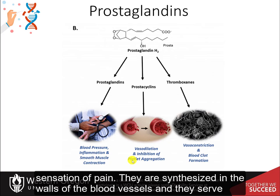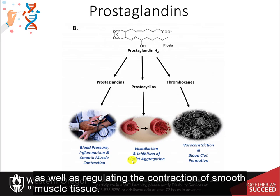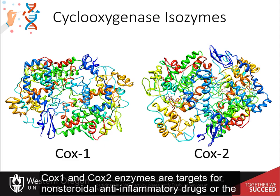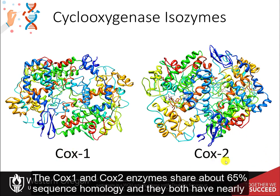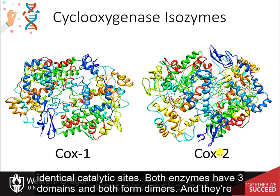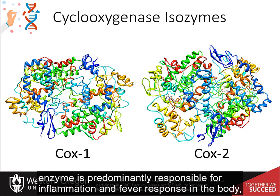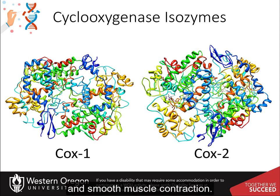Prostaglandins are synthesized in the walls of blood vessels and serve the physiological function of preventing needless clot formation, as well as regulating the contraction of smooth muscle tissue. Due to their role in mediating inflammatory and fever response within the body, COX-1 and COX-2 enzymes are targets for non-steroidal anti-inflammatory drugs, or NSAIDs, such as ibuprofen. The COX-1 and COX-2 enzymes share about 65% sequence homology and have nearly identical catalytic sites. Both enzymes have three domains, both form dimers, and they are often found attached to the membrane of the endoplasmic reticulum. Note that COX-2 is predominantly responsible for inflammation and fever response, whereas COX-1 is involved with regulation of GI tract mucus production and smooth muscle contraction.